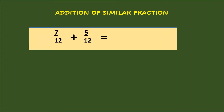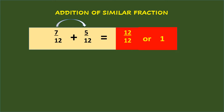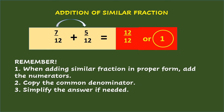When adding similar fractions in proper form, add first the numerators and copy the common denominator. So, 7/12 plus 5/12 equals 12/12, or simplifying it, is one whole. Remember: when adding similar fractions in proper form, add the numerators, copy the common denominator, and simplify the answer if needed.